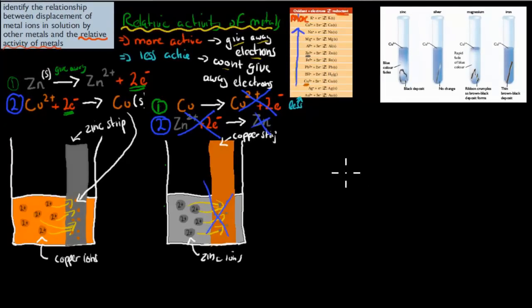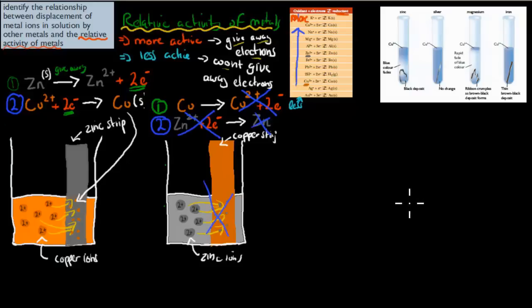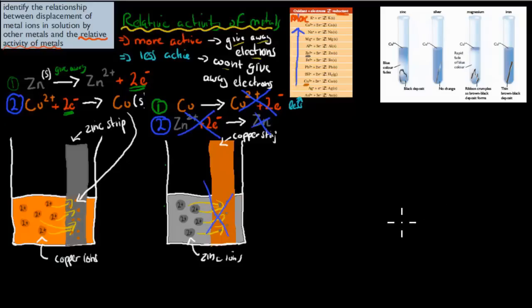Let me show an animation that goes over those two points. First, with a copper solution and a zinc strip: putting the zinc strip into the copper solution causes copper to deposit on the zinc, because zinc gives away its electrons, becoming zinc 2+, while copper becomes solid. But if we reverse it — a copper strip going into zinc solution — nothing happens, because copper is not the more active metal, so zinc will not deposit on copper.